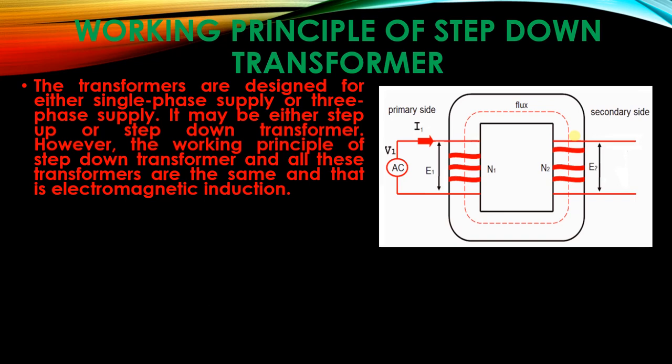This figure shows the basic diagram of the transformer. The left side is the primary winding, called the primary side, and the right side is called the secondary side. The secondary windings are denoted by N2, the primary windings by N1, and this is the core through which the flux flows.